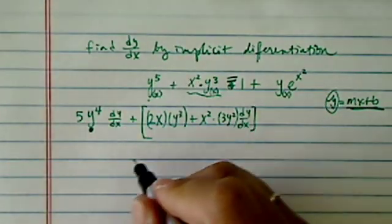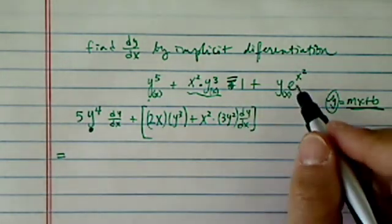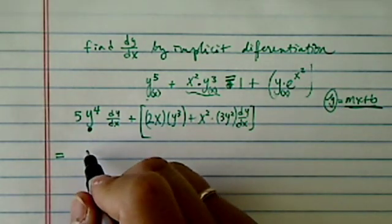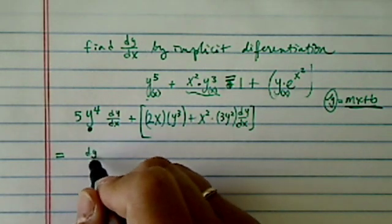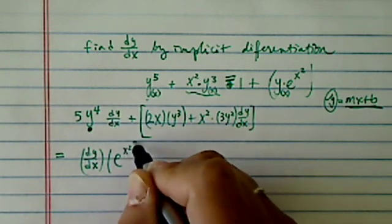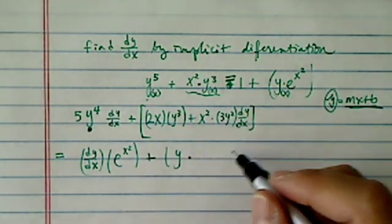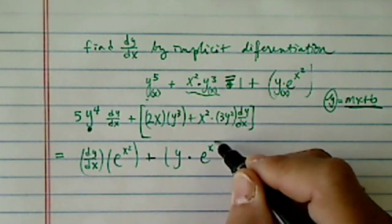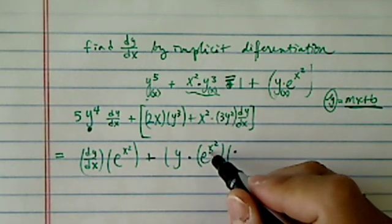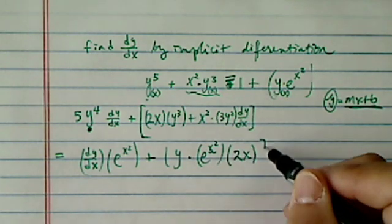Now I'm running out of room here, so equals: derivative of 1, that's gone. Derivative of this next term — once again I have to use the chain rule. So derivative of y is dy/dx, and then leave the second one alone, plus leave the first one alone times the derivative of the second one. So e to the x squared — that's the first shell — and then derivative of x squared, which is 2x.